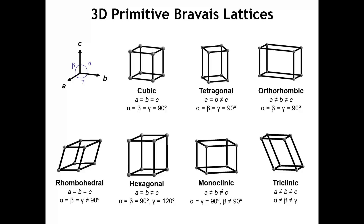We can divide these seven Bravais lattices into three shown at the top, which have orthogonal lattice vectors — that is, A, B, and C are all perpendicular to one another. The cubic Bravais lattice, which is probably the most symmetric, is very easy to visualize. Each of the six faces are all squares, meaning the lattice vectors all have equivalent lengths.